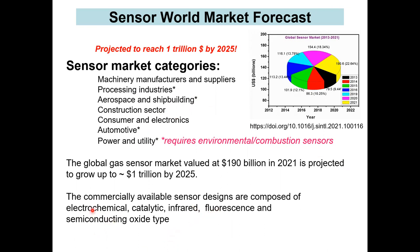In terms of commercially available sensors, you have electrochemical sensors, analytic type sensors, infrared sensors, fluorescence type sensors, and semiconductive oxide type sensors. I'll primarily talk about the semiconductive oxide type and the electrochemical type in this lecture series. Semiconducting oxides cover about 40% of the materials used in chemical sensing.